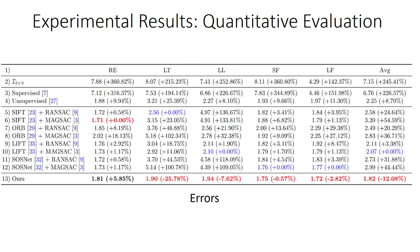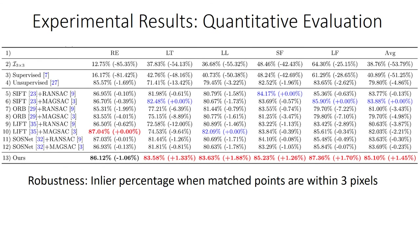We list all quantitative evaluations here. The table shows that our method achieves the lowest average error across all scenes except the regular one, and even for the regular scene our results are comparable. We also set a threshold of 3 pixels to determine whether a point pair is matched, giving the inlier percentage shown in the table. This reflects the robustness of our method, which remains the most robust compared with others.